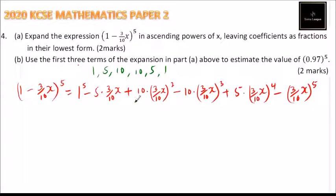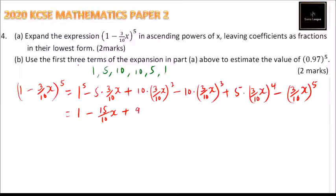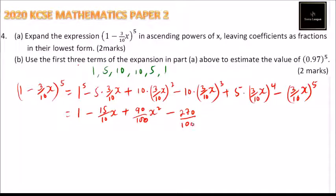That is the expansion. We can now simplify: 1 raised to the power of 5 is 1, minus 5 multiplied by 3 gives 15 over 10 x. Then we have plus 3 squared is 9, times 10 is 90, divided by 10 squared which is 100 — so 9 over 100 x squared. Then minus: 3 cubed is 27, times 10 is 270, divided by 10 cubed which is 1,000 — so 270 over 1,000 x cubed.